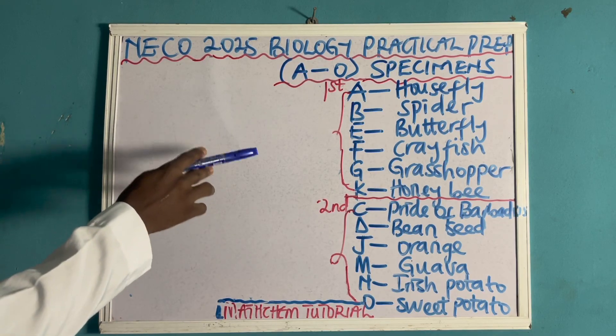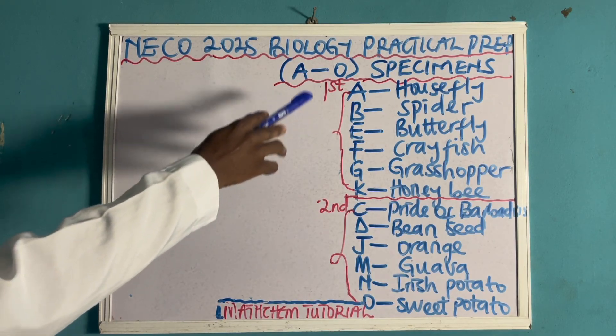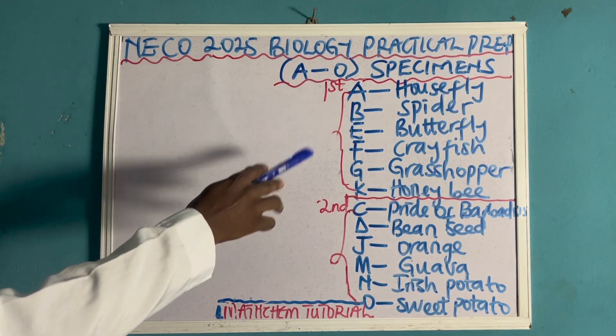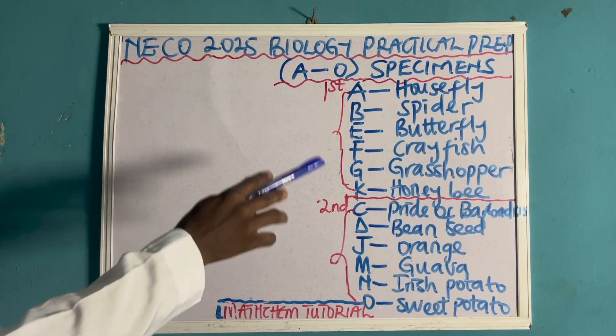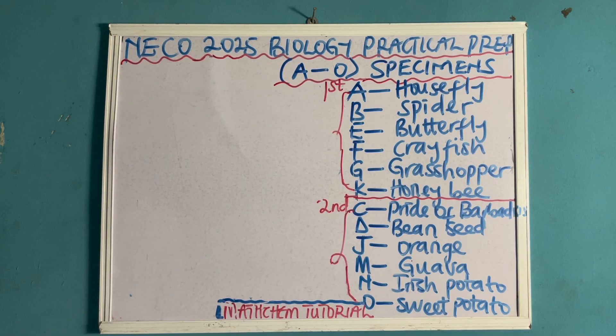I've made a video of the first category, which comprises specimens A, B, E, F, G, and K. So if you need the first category video, just comment that you need it and I'll send you the link immediately.